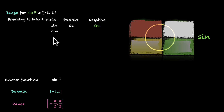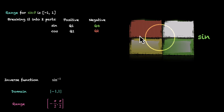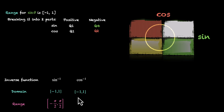We did the same for cosine. For positive values we picked Q1, and for negative values — because we couldn't pick Q4 since cosine is also positive there — we picked Q2. So the range for cos inverse is Q1 and Q2. Domain is minus one to one and range is zero to π.